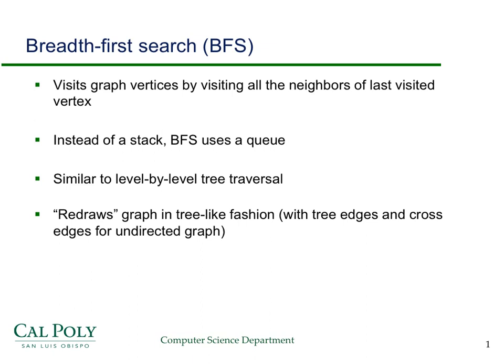If you have a tree and you do breadth-first search, it's just going to be a level-by-level tree traversal. If you're using a full graph that's not a tree, it basically redraws the graph in a tree-like fashion. There are certain edges which it doesn't draw, and those are going to be cross-edges. We'll see that in a lot more detail in the next few slides.